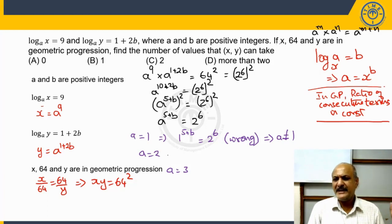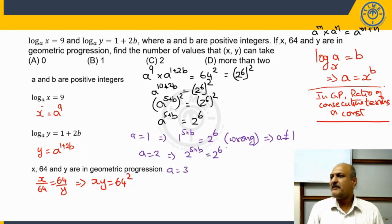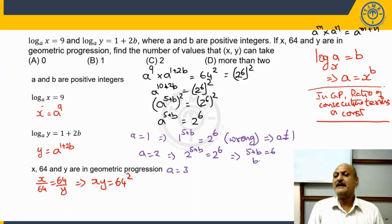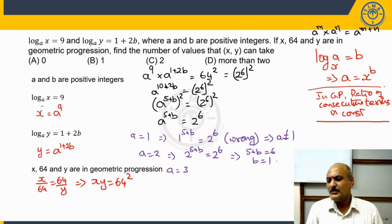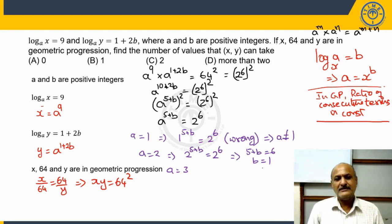Now let us see what happens if a equals 2. We get 2 raised to the power of (5 plus b) equals 2 to the power of 6. Since the bases are the same, the powers can be equated: 5 plus b equals 6, which implies b equals 1. Since a equals 2 is a positive integer and b equals 1 is a positive integer, this is a valid set of numbers satisfying the condition.